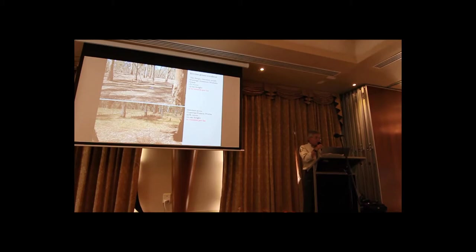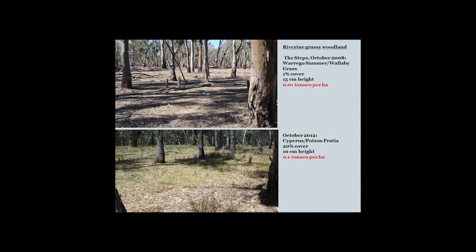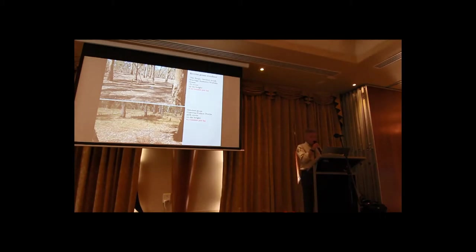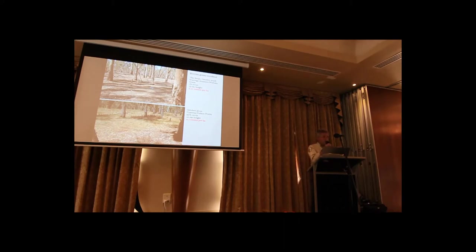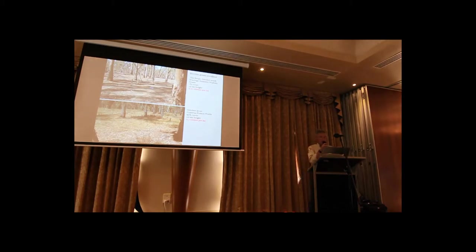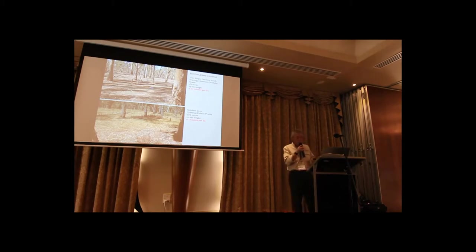The Riverine Grassy Woodland Red Gum Landscape Unit is higher again. Even though we've had widespread flooding over the last few years, very little of this zone has received much, if any, flooding, and the response of this zone has predominantly been due to rainfall. We've obviously had good rainfall over the last few years, which has caused the understorey to respond. The top photo, middle of the drought, shows virtually no biomass at all — 0.01 tonnes per hectare. The bottom photo, a similar time of year but four years later, shows a green tinge coming through from rainfall response, still very low at 0.1 tonnes per hectare.